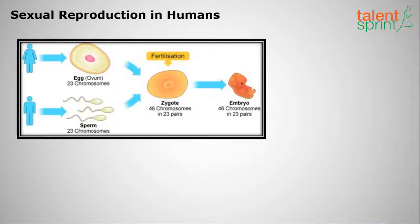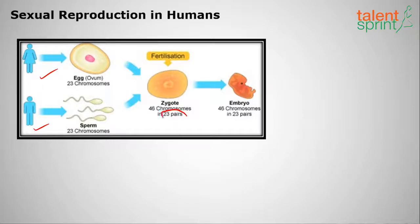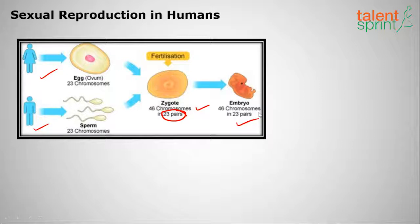During fertilization, 23 chromosomes from the female and 23 chromosomes from the male fuse together to form 23 pairs of chromosomes — that is 46 chromosomes total.